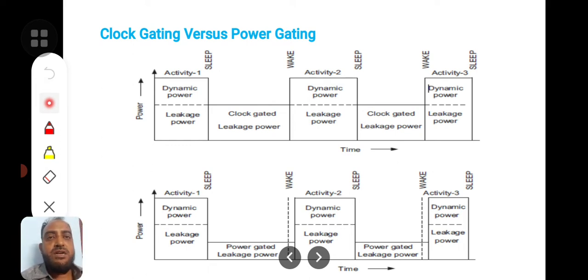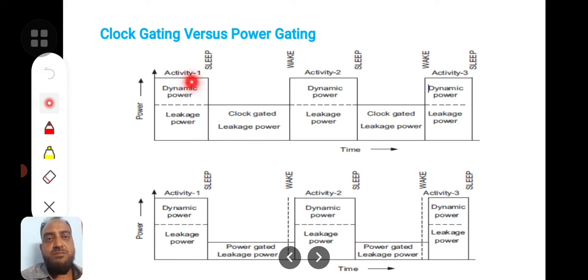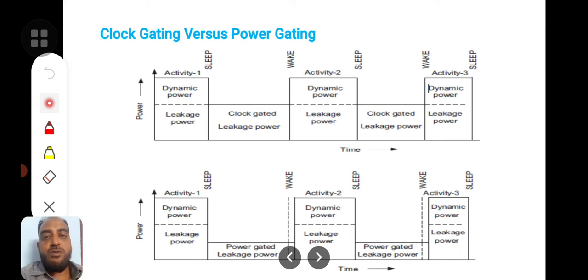Consider one circuit which is active, conducting one activity — it will have two kinds of power dissipation: one is dynamic power dissipation because of the clock, and leakage power dissipation because of the circuit structure. These are the two kinds of power dissipation taking place while that circuit is in active mode.